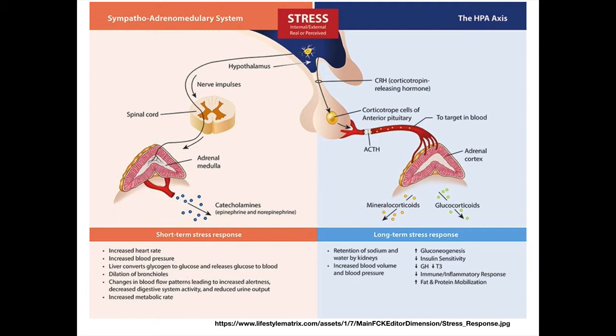The response includes an increase in heart rate and blood pressure, glucose moving into the blood as the liver converts glycogen into glucose, opening of airways, and changes in blood flow patterns. There's more blood flow to the brain and skeletal muscles, less to the digestive system and kidneys, so we don't urinate as much. There's also an increase in metabolic rate. This is fast and profound — this is fight-or-flight.